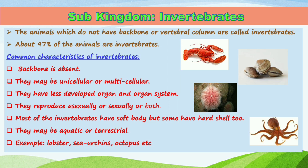Most invertebrates are soft and they have different characteristics — they do not possess a vertebral column in their body. The first characteristic of invertebrates is that the backbone is absent. These animals may be unicellular or multicellular, having many cells. They have less developed organs and organ systems; in some organisms they don't have organs at all.